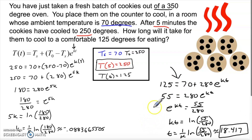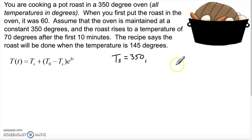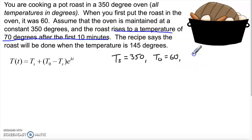That was an example of an object cooling down. Let's look at an example of an object heating up. This time we're cooking a pot roast. The oven is 350 degrees — that's T sub s. The roast starts at 60 degrees — the initial temperature. It rises to 70 degrees after the first 10 minutes, meaning T(10) = 70.